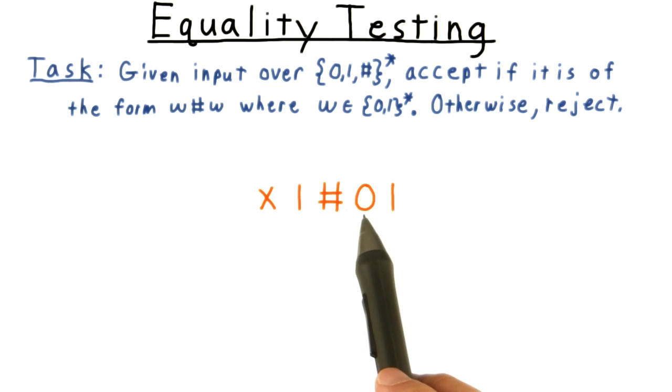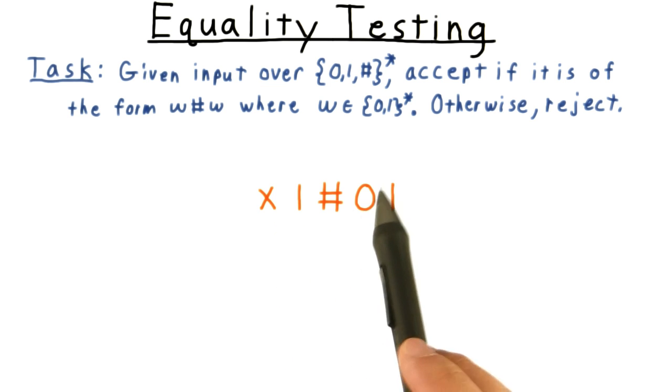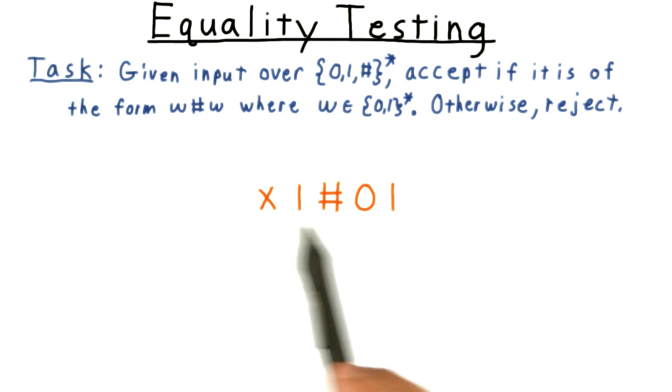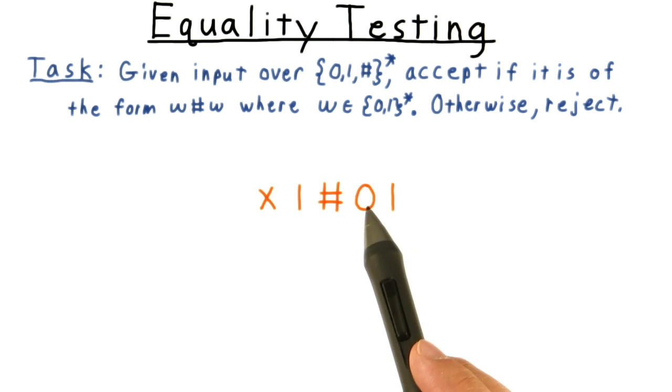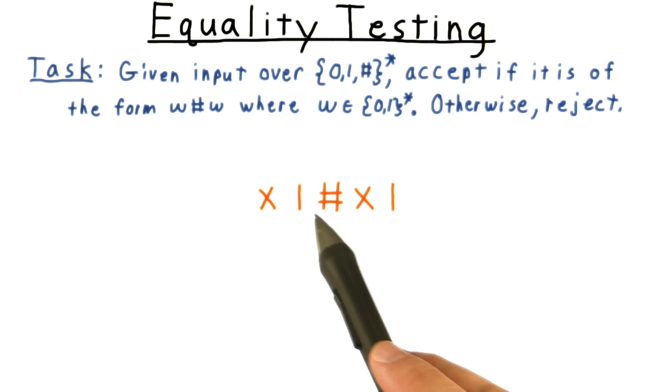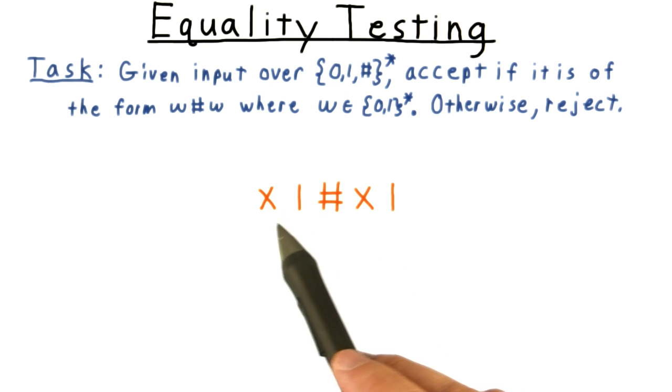So we'll go along to the first symbol after the hash, and indeed it is a zero. If it wasn't, then we can reject the input right away. Those two strings on either side of the hash aren't equal. We x out that zero so that we know not to check it again, and we move left, past the hash, over to the first x after that that we encounter.